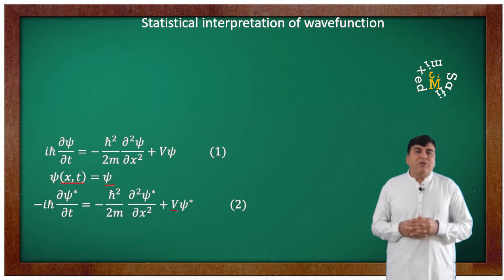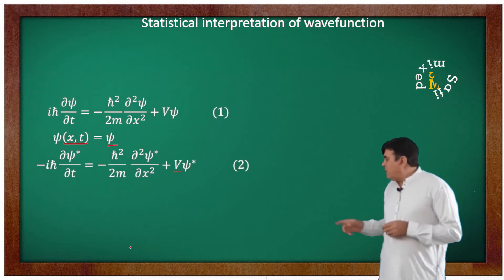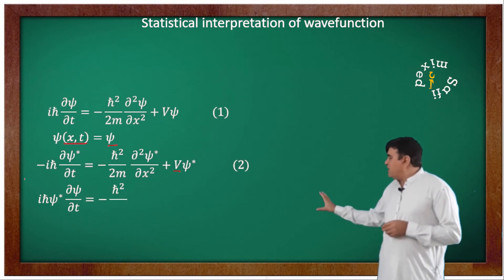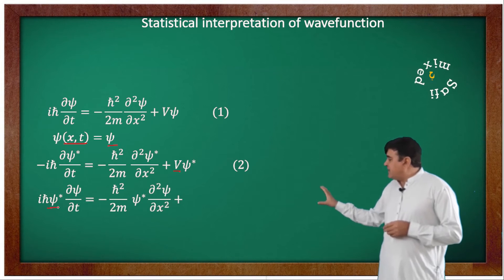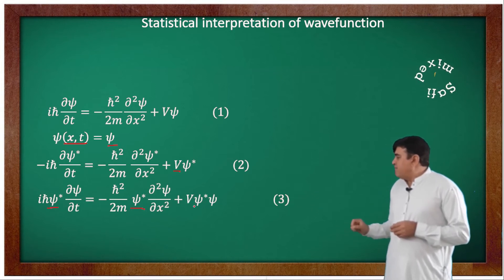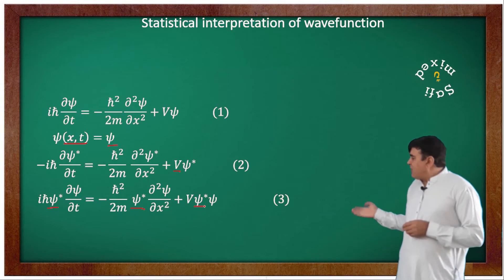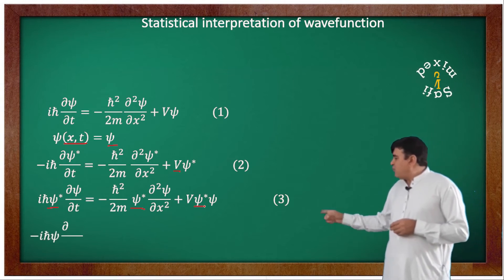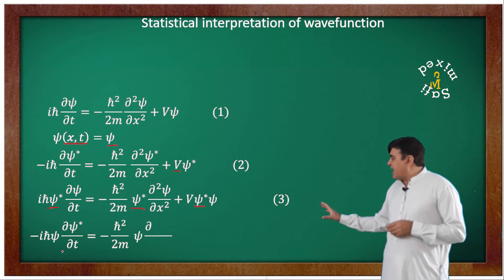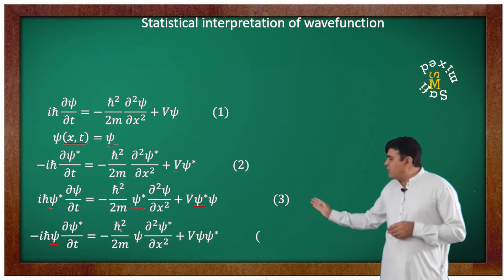We can write equation 1 into this one form where I have multiplied psi steric with each term in the equation. And similarly, I can write equation 2 into this form where I have multiplied psi from the left with each term of the equation.